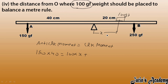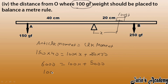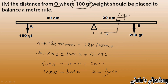We have 250 × 20 on the clockwise side. The left side is already 6000 and the right side is 5000, so 6000 equals 100x plus 5000. Subtracting 5000: 1000 equals 100x, so x equals 10 centimeters. Therefore, the 100 gram force should be placed at 10 centimeters on the right side from O.